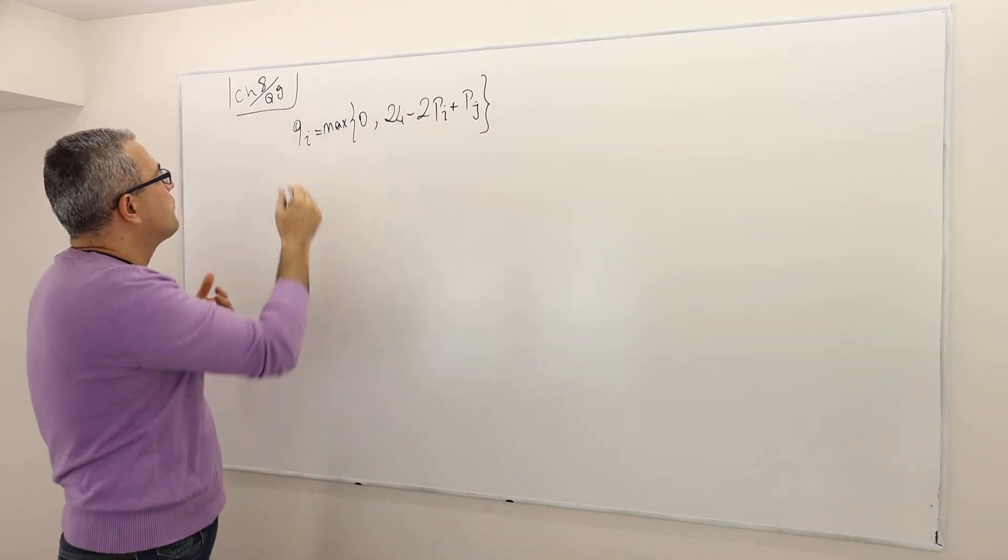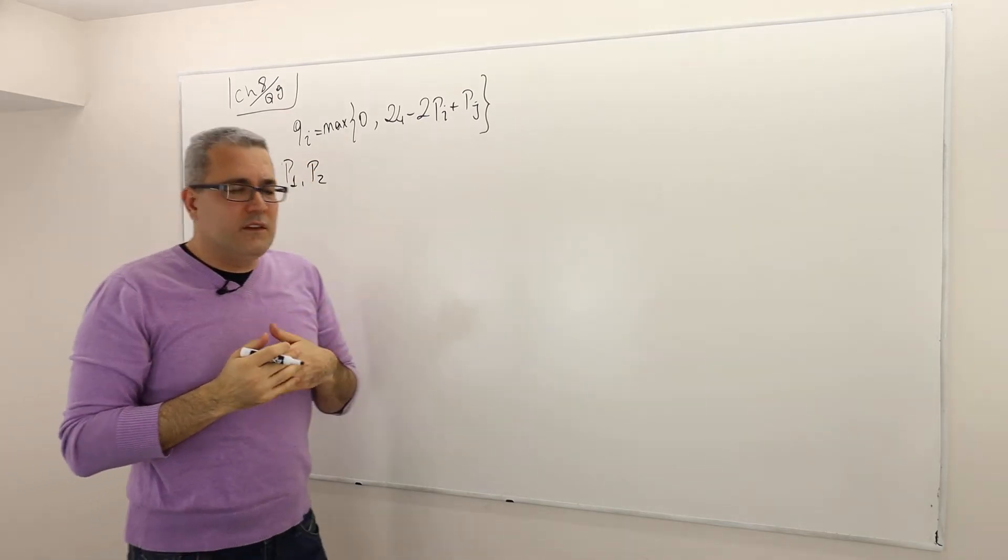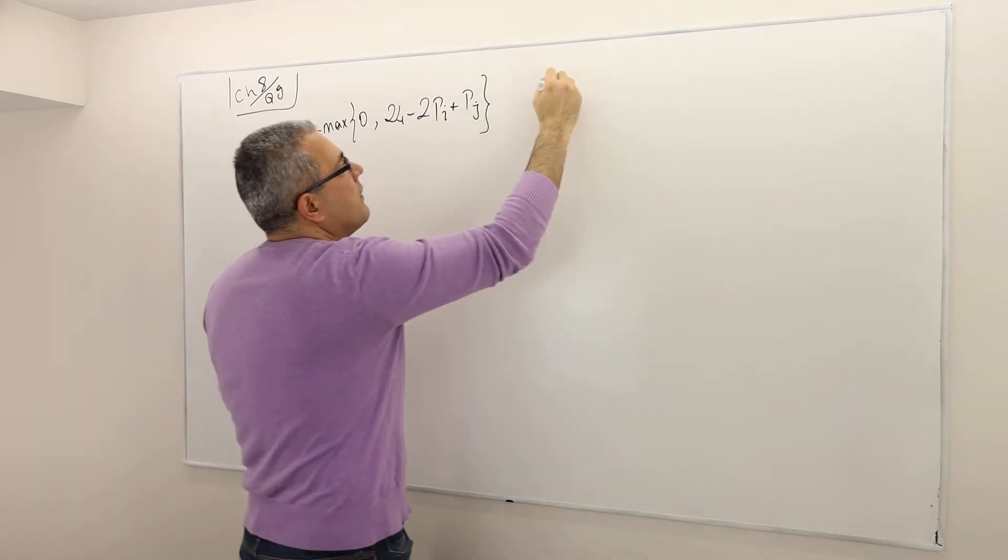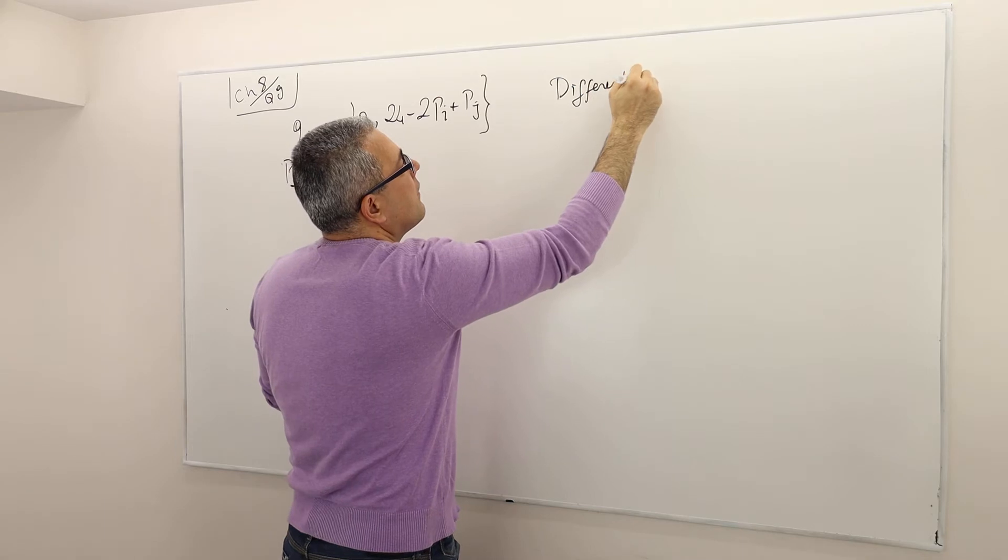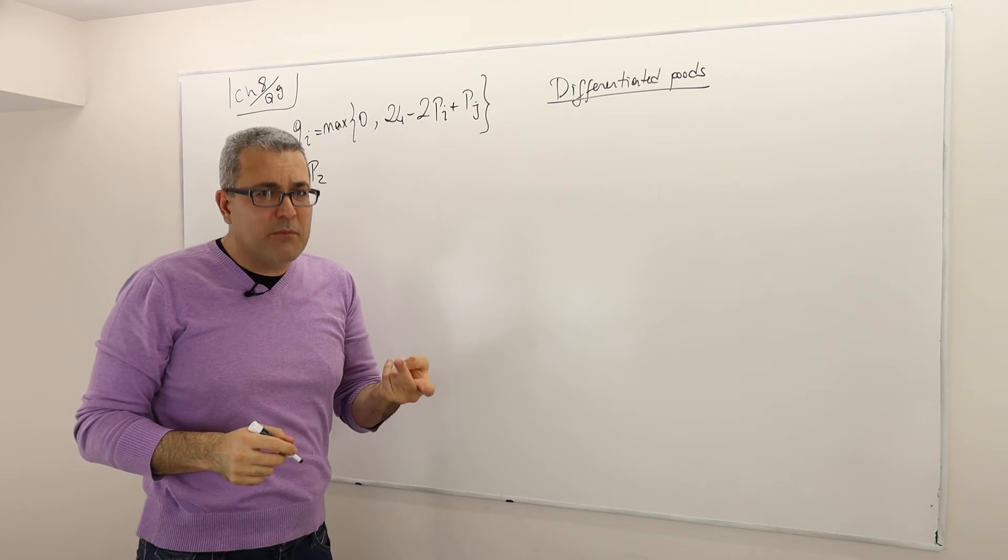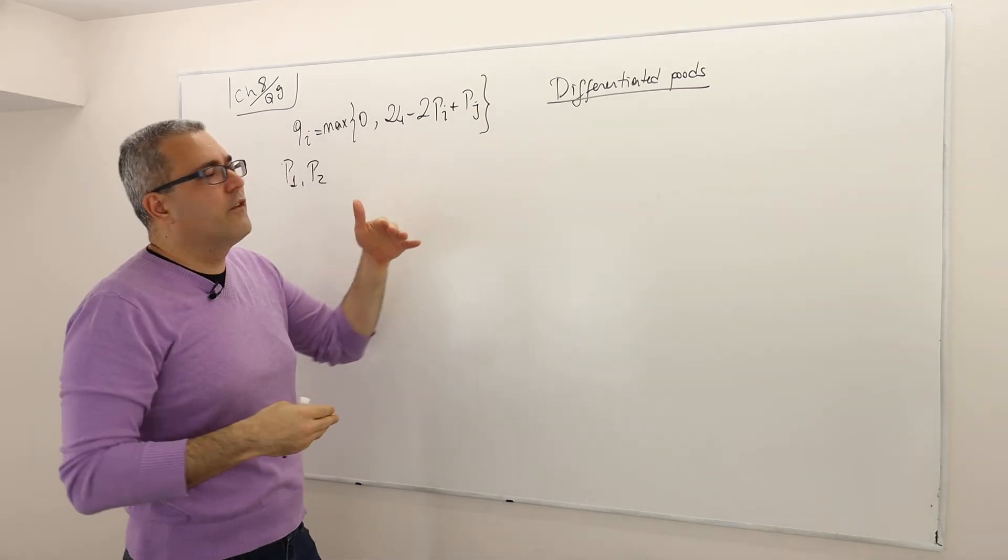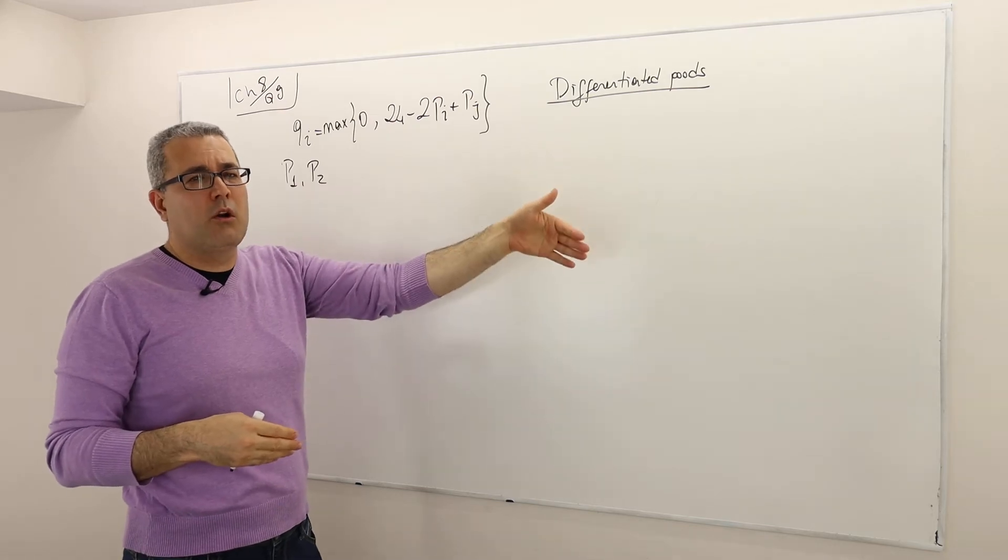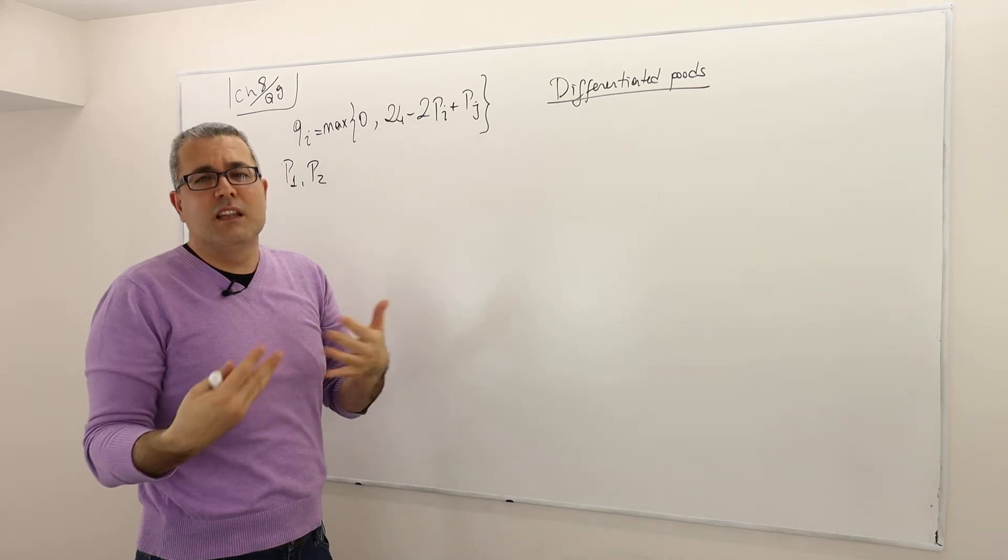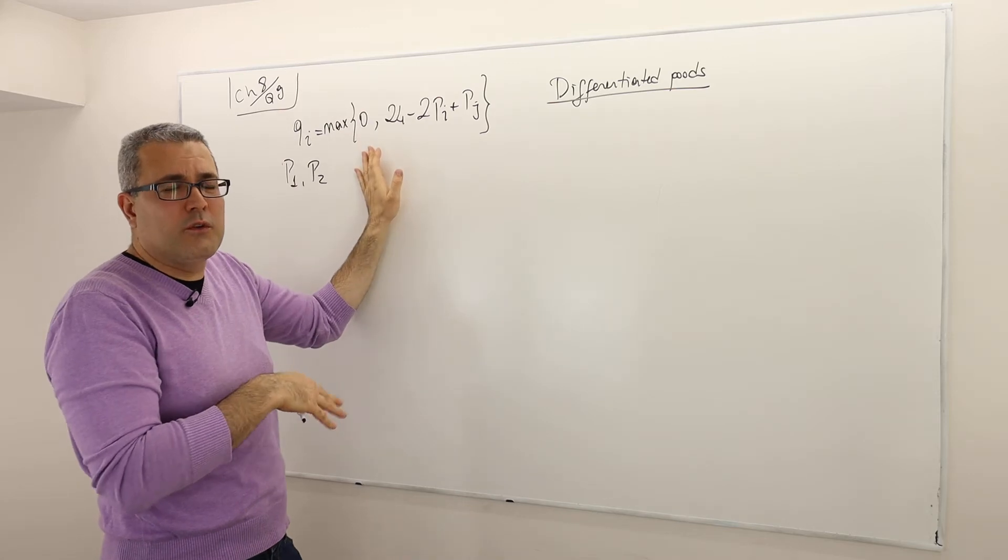So the question is, both firms are choosing prices, p1 and p2. By the way, this is a price competition for differentiated goods. Meaning these two firms are not selling exactly the same thing, so they don't really have to charge the same price. But you can think of firm one is producing Coca-Cola, the other firm is producing Pepsi. So they're not really exactly the same thing, but they're related, meaning the price of good one is going to affect the demand for good two and vice versa.